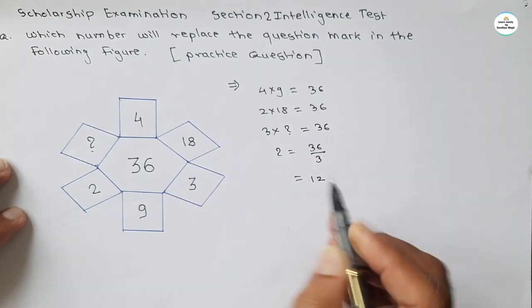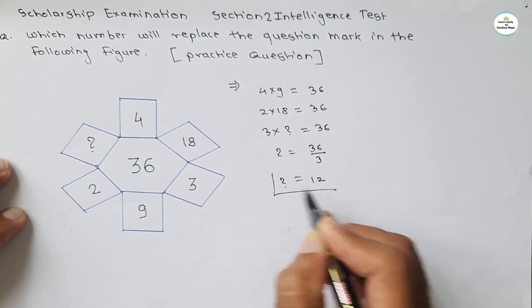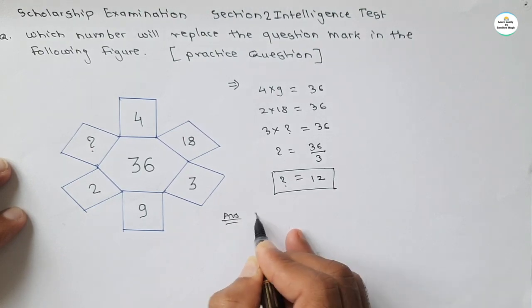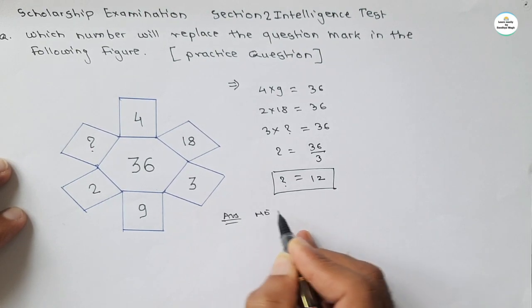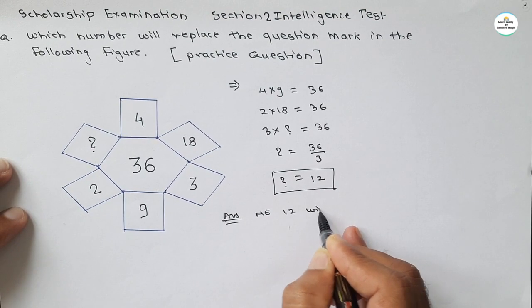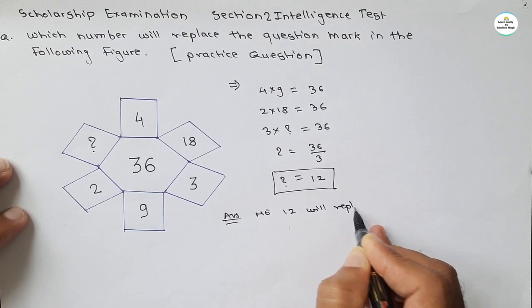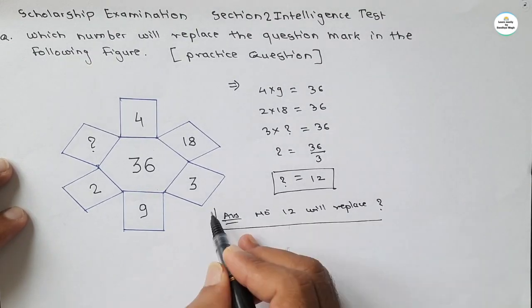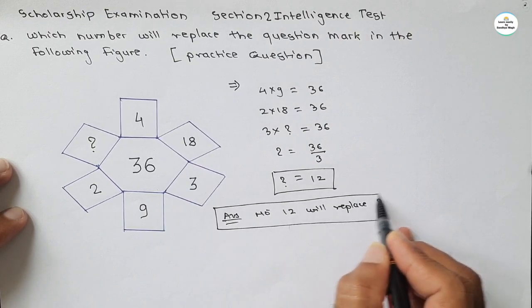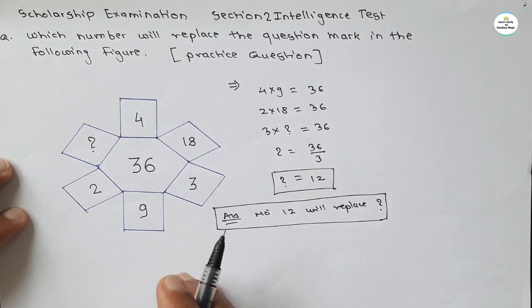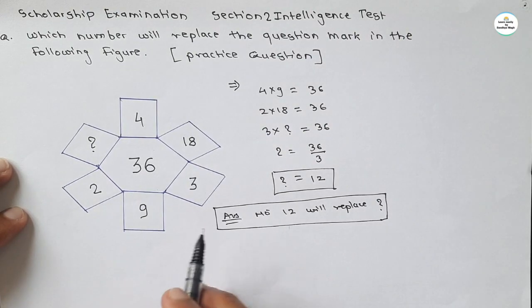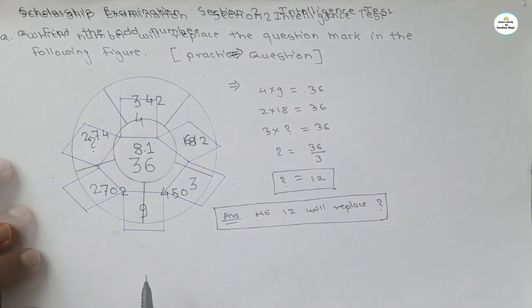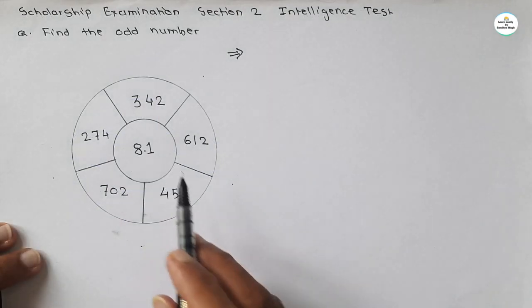So the question mark will be 36 divided by 3, which is 12. Our answer is 12, which replaces the question mark. This is very simple — you just have to find the rhythm, a specific pattern which is common for all numbers. Now let's see the question for this video.